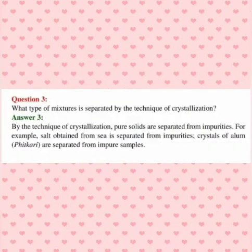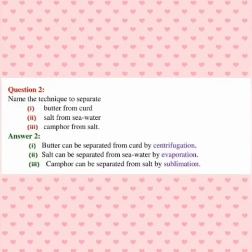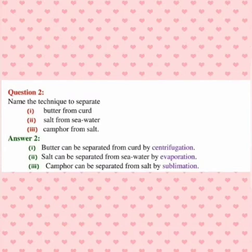Third is what type of mixture is separated by technique of crystallization. The particular example is salt as well as fitkari. Next is technique which separate butter from curd that is centrifugation, salt from sea water you can write evaporation as well as crystallization, camphor from salt that is sublimation children. That also we have discussed in the explanation part children.